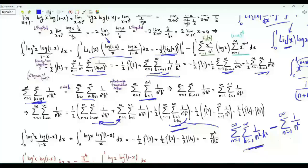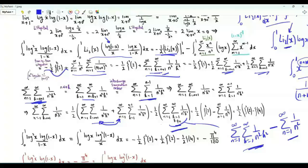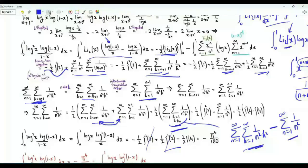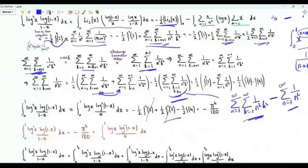This double sum is ζ(2)² - ζ(4), with ζ(2) = π²/6 and ζ(4) = π⁴/90. The integral of interest becomes -½ζ(2)² + ½ζ(2)², so these two terms cancel, leaving -½ζ(4). The first integral equals -π⁴/180.